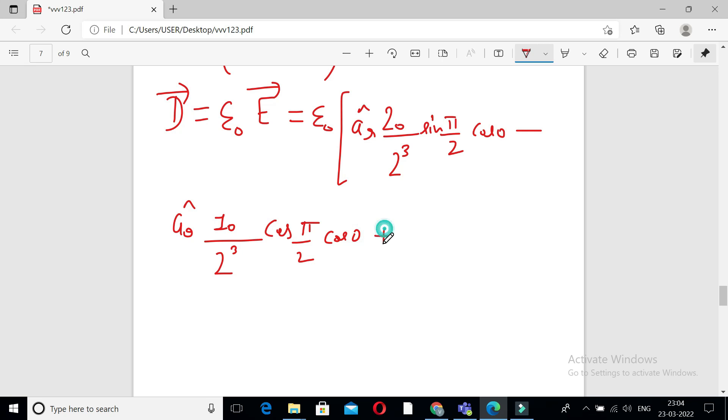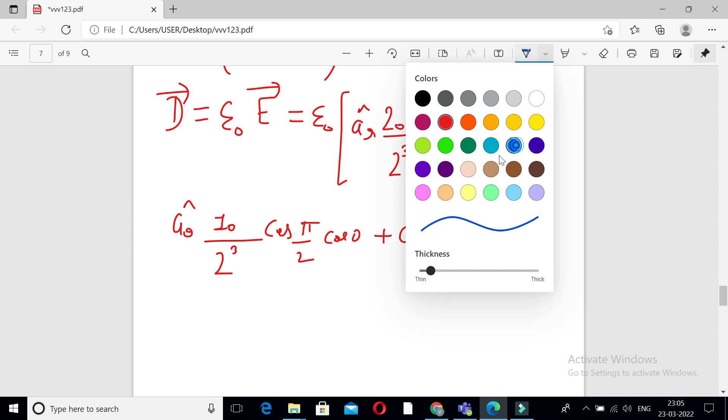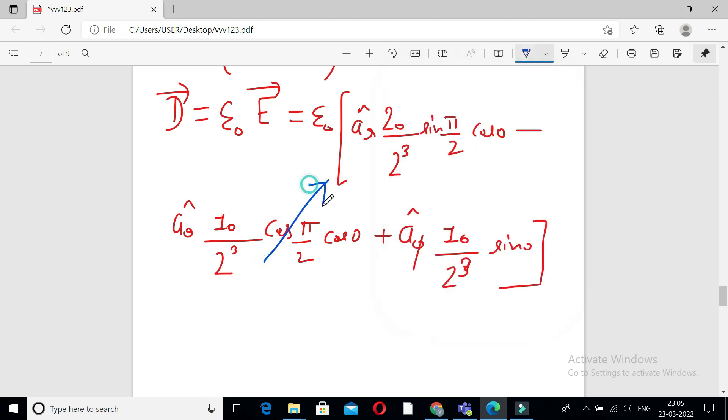Plus A phi cap 10 upon 2 cube. So we get cosine pi by 2 is 0, sine 0 is 0.